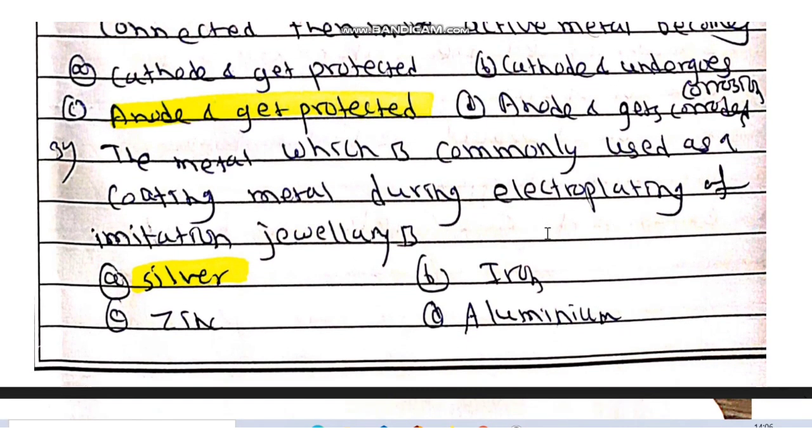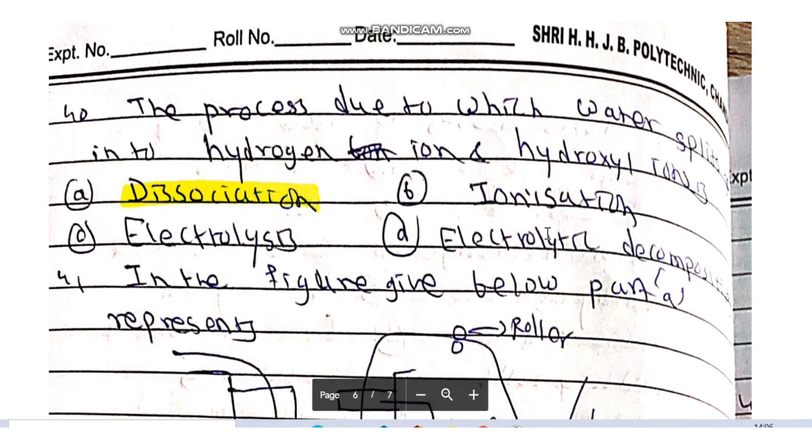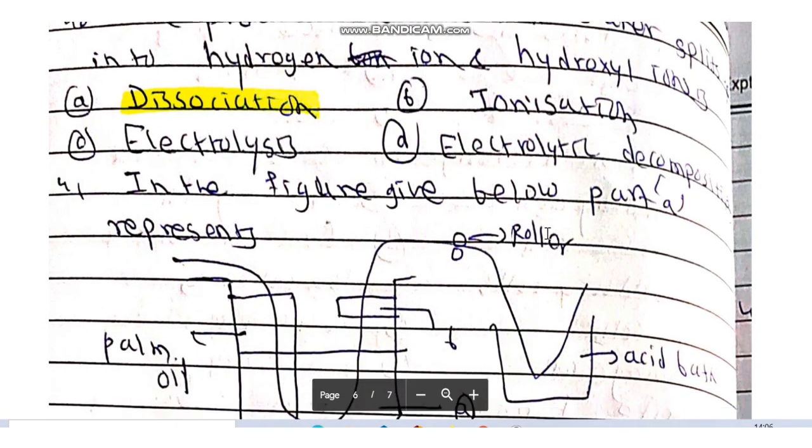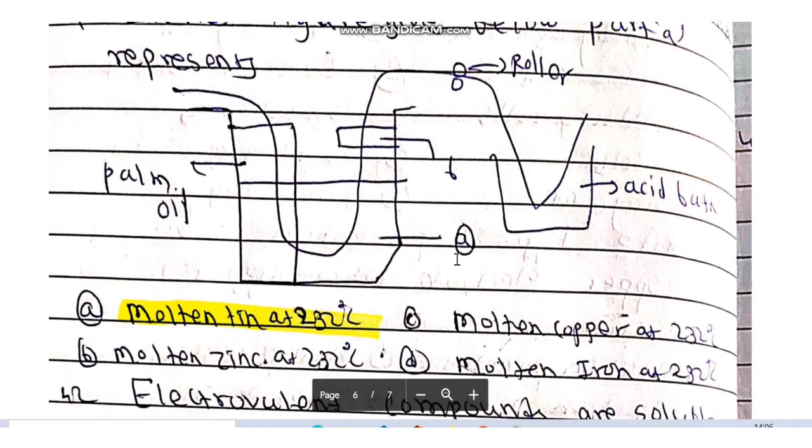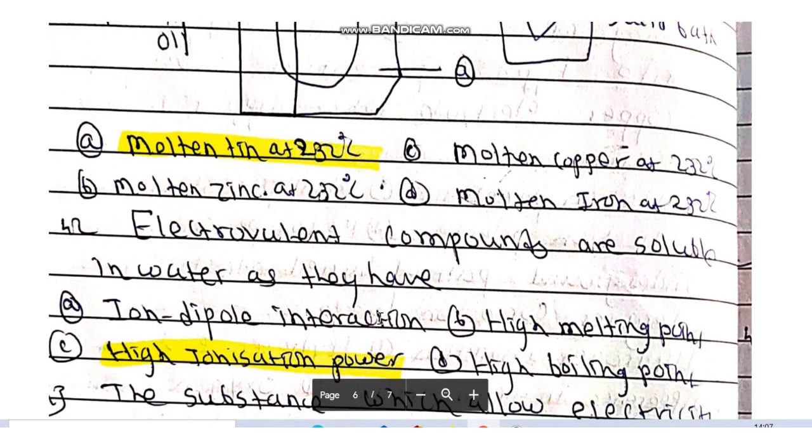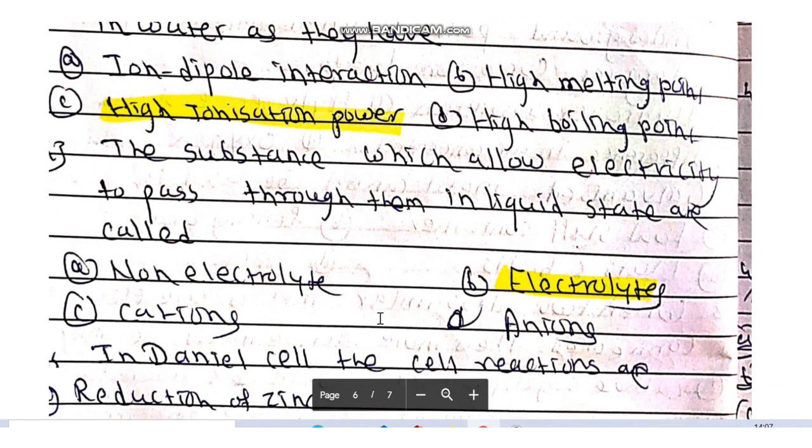The metal which is commonly used as a coating metal during electroplating of imitation jewelry is silver. The process due to which water splits up into hydrogen ions and hydroxyl ions is known as dissociation. In the figure given below, part A represents molten tin at 232 degrees Celsius. Electrovalent compounds are soluble in water as they have high ionization power.